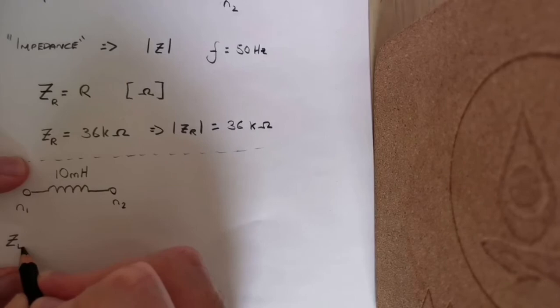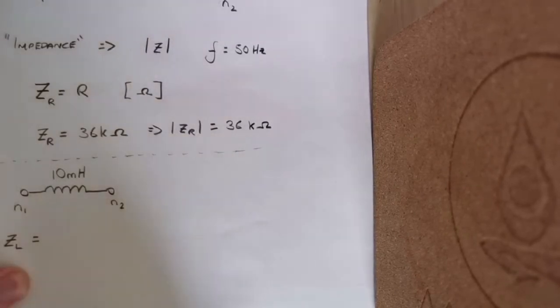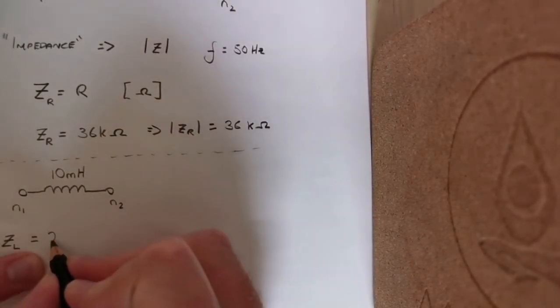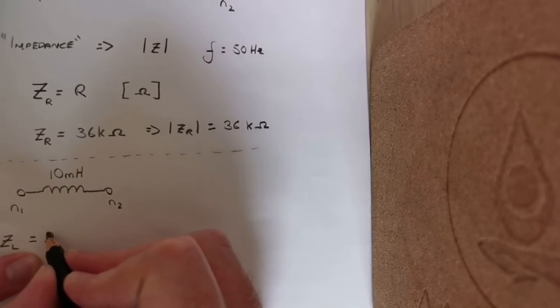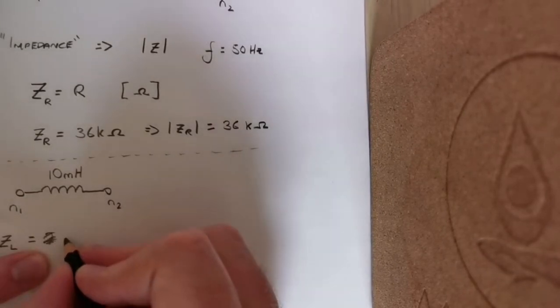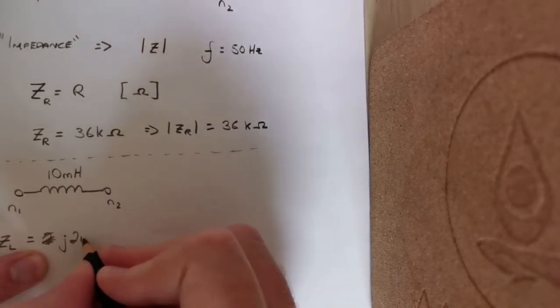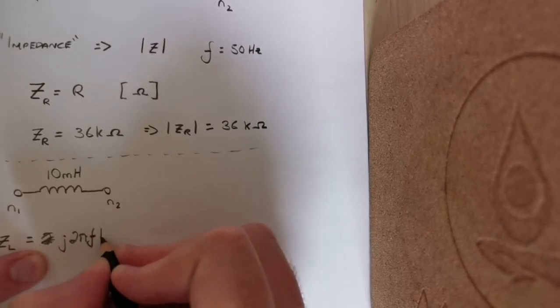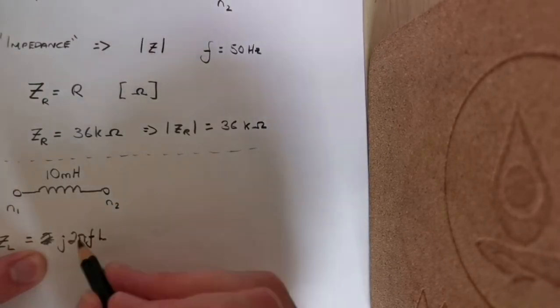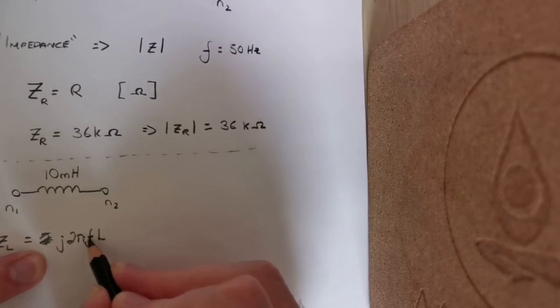In that case, the impedance of an inductor ZL is j times 2 pi f L, so we see here it depends on the inductance and the frequency.